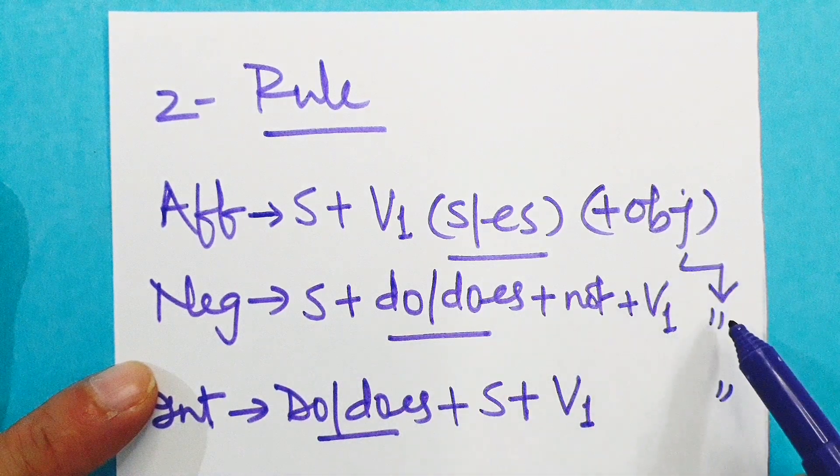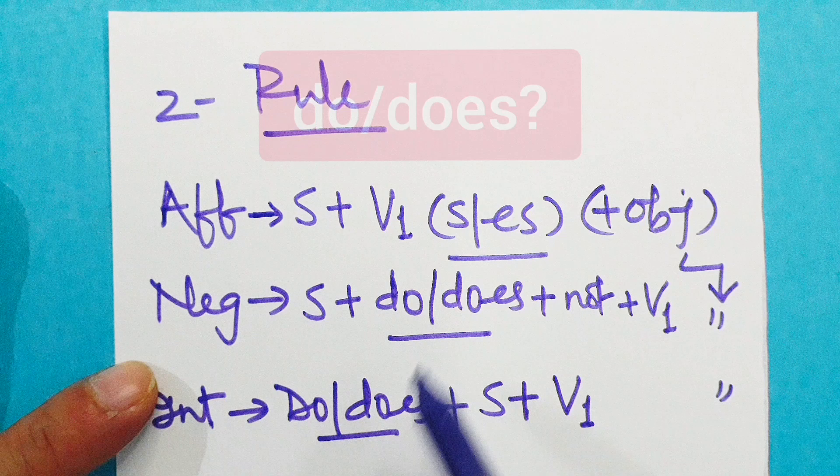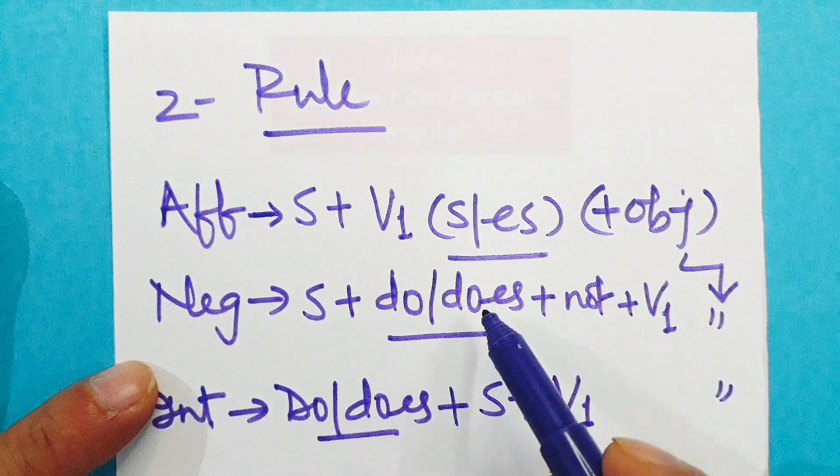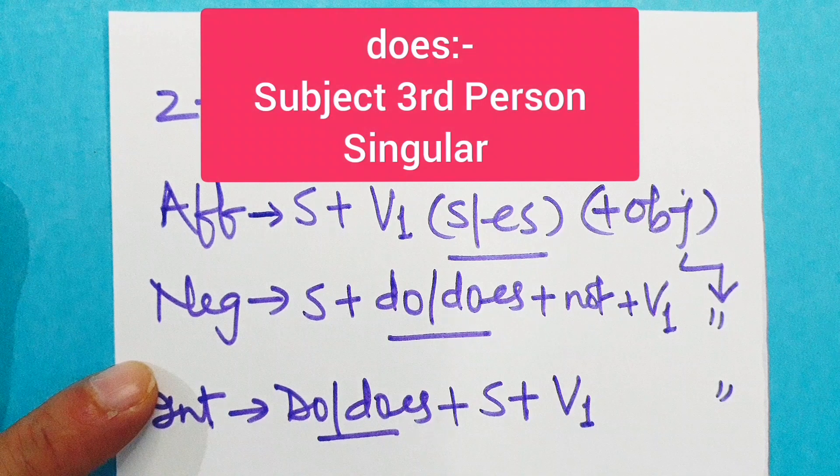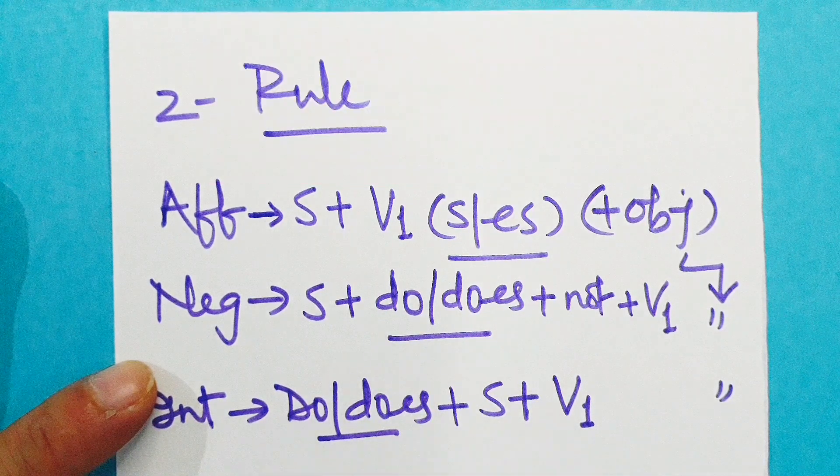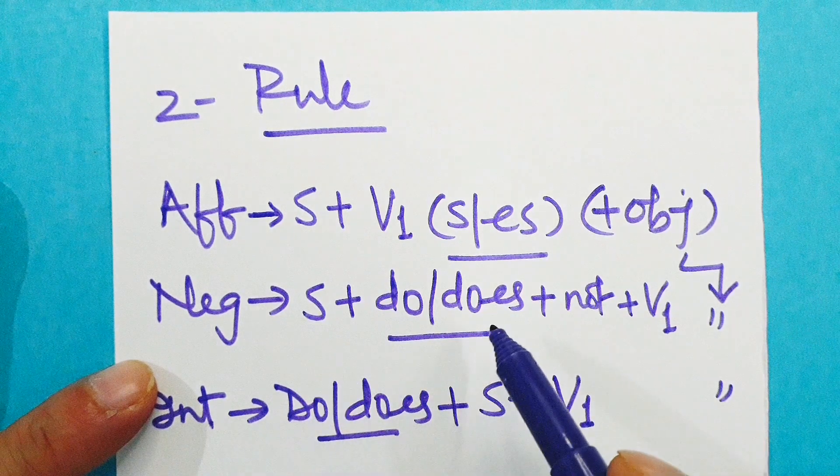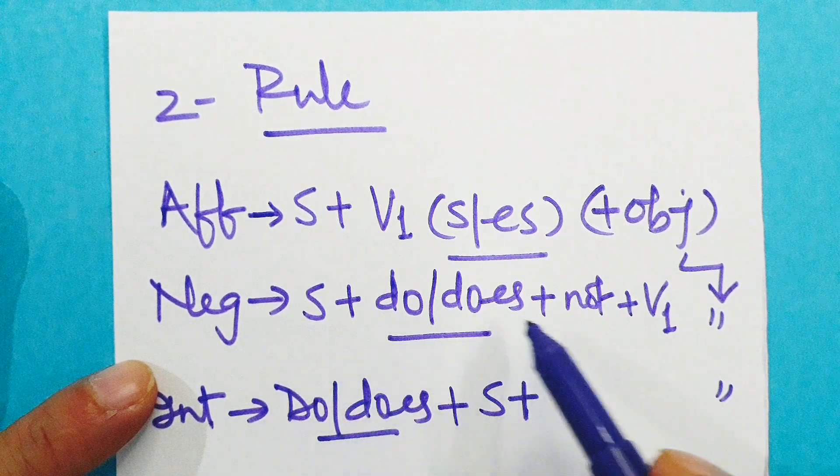Now negative: the rule is subject plus do or does not plus V1 plus object if any. Then how to choose between do and does? The same reason: does is applied with the subject third person singular, and do with the rest. Here the subject is he, which is third person singular, then we have to opt for does. He does not write a letter means he doesn't write a letter.